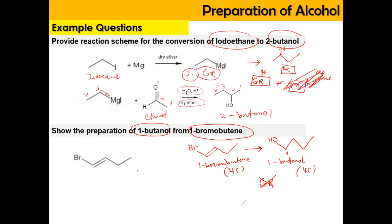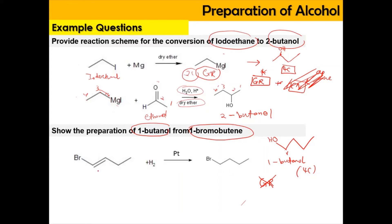First, starting from 1-bromobutyne, I'm going to do hydrogenation by adding hydrogen to the system. This happens in the presence of a platinum catalyst at around 50 degrees Celsius. This converts 1-bromobutyne into 1-bromobutane, as hydrogen is inserted across the double or triple bond.